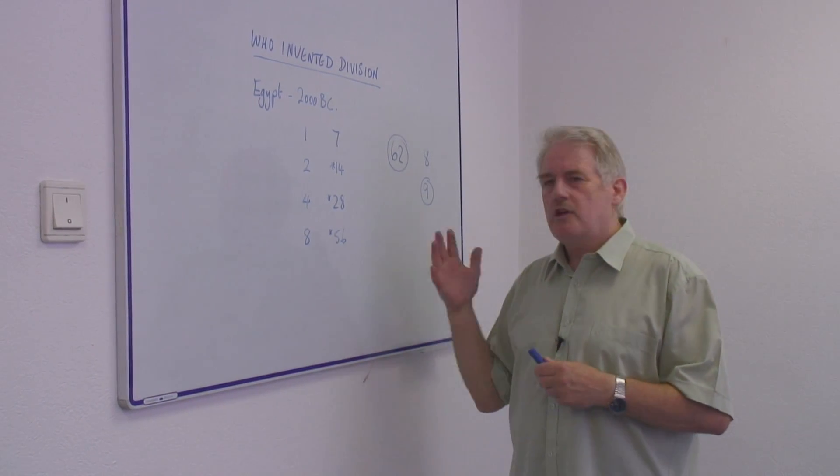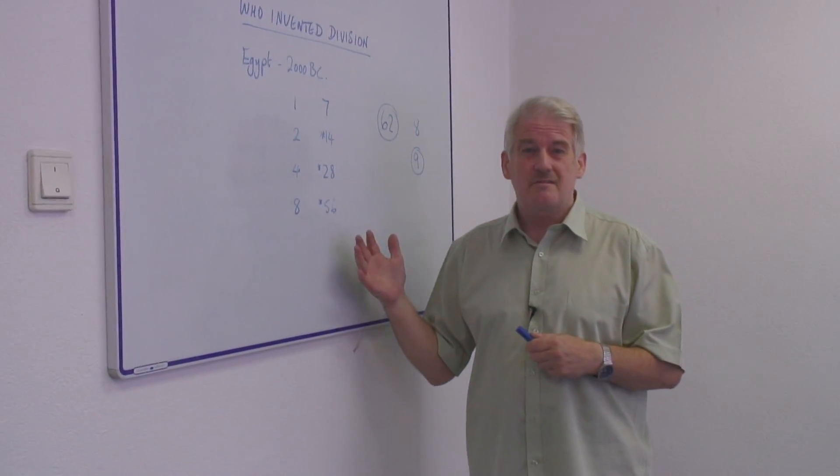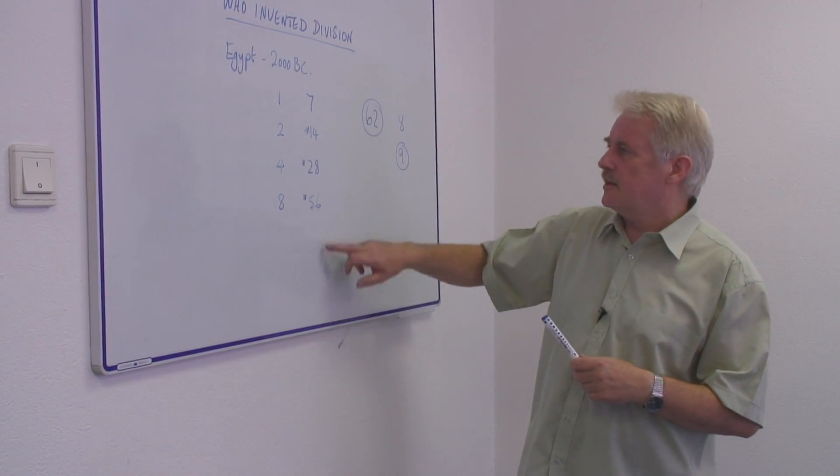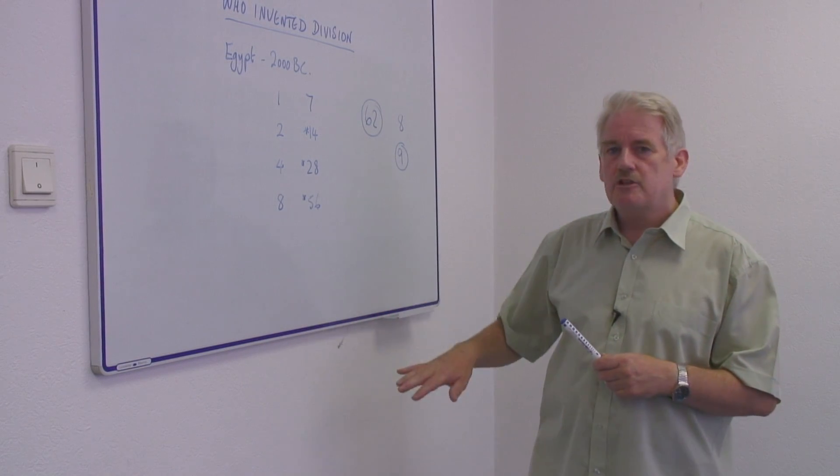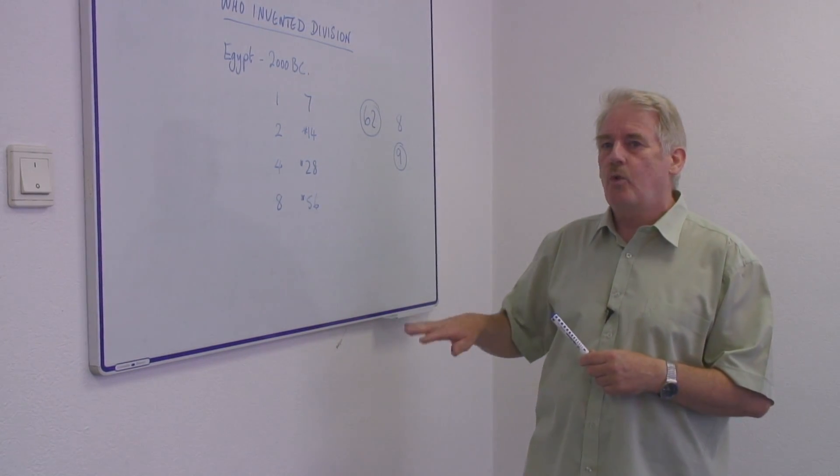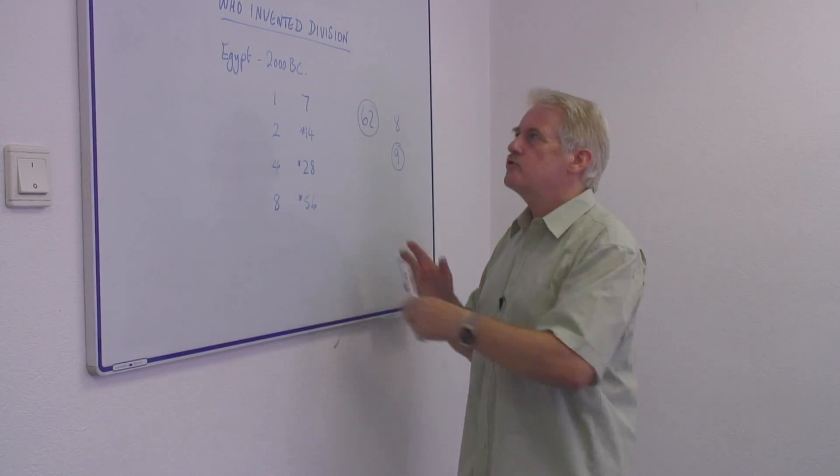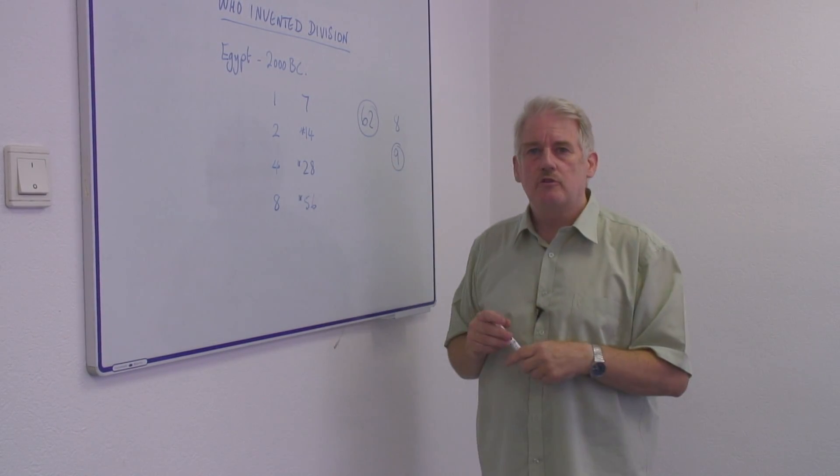It would be very cumbersome for very large numbers, very difficult. Although, as you can see with this system, it rapidly increases if you're doubling each time. So, it's not actually quite as bad as you imagine. And you can create tables to help you do this task.